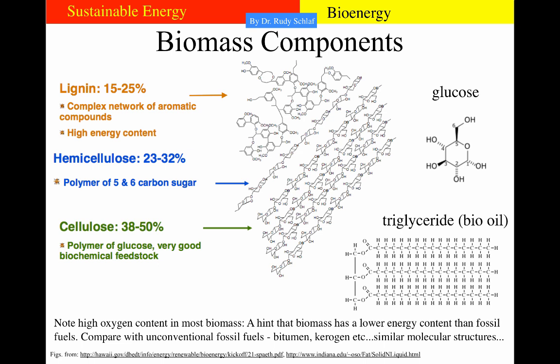This slide shows prototypical molecules found in biomass, grouped into two principal groups. On the right are precursors to biofuels: glucose (from which alcohol can be made fairly easily) and triglyceride (the precursor to biodiesel, extracted from soybeans or algae). On the left are larger structural molecules: lignin, hemicellulose, and cellulose — these make up the plant structure and are quite similar to unconventional fossil fuel molecules like bitumen and kerogen. These structural molecules are best for direct combustion in power plants or for heating purposes.